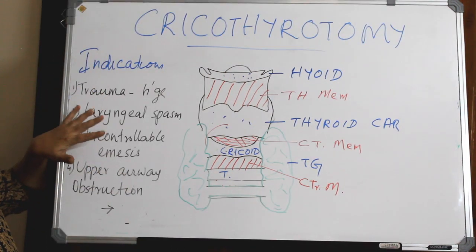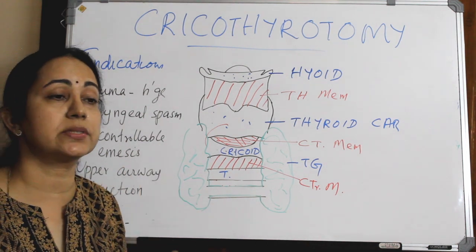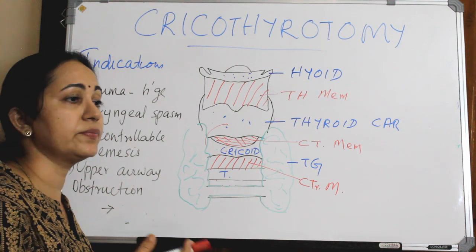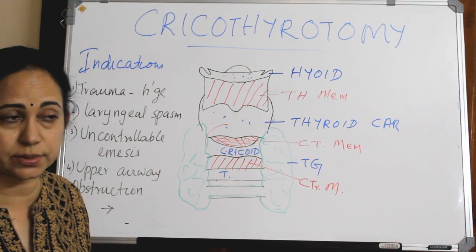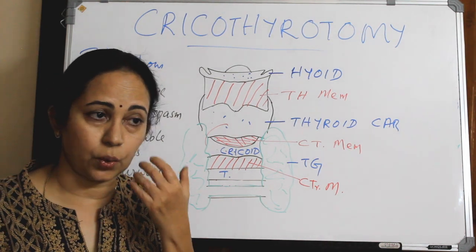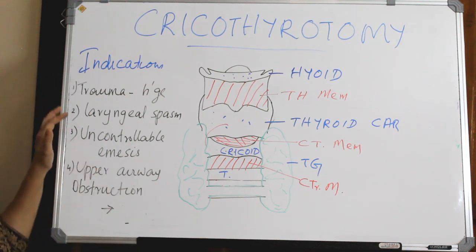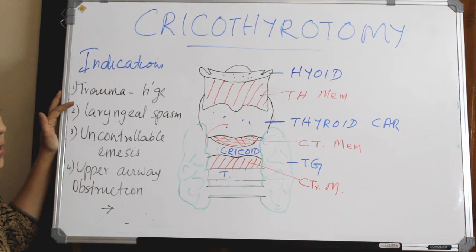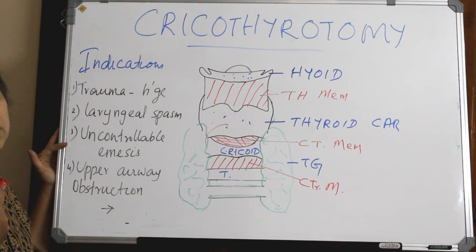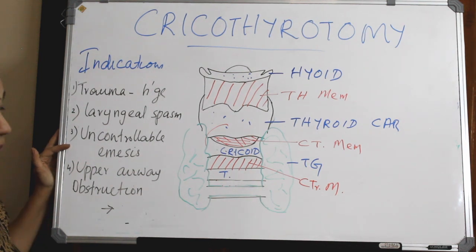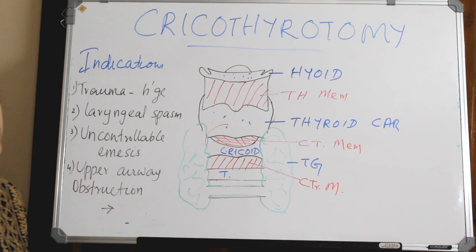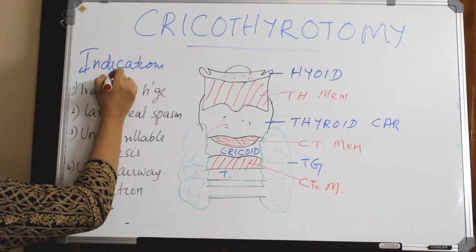These are the absolute indications: all situations where conventional airway techniques have failed — you cannot intubate or otherwise cannot establish an airway and a CICO situation arises. The most common is trauma, leading to hemorrhage from the nose and pharynx. Other indications include facial muscle spasm or laryngeal spasm, uncontrollable emesis with high risk of aspiration, and upper airway obstruction due to a foreign body or any other reason.